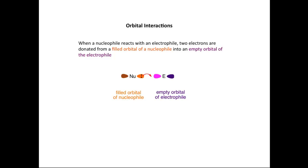When a nucleophile reacts with an electrophile, two electrons are donated from a filled orbital of the nucleophile into an empty orbital of the electrophile. This is illustrated here, where we have a filled p-orbital with a lone pair on the nucleophile interacting with the empty orbital of the electrophile. We can show the lone pair of electrons moving towards the empty orbital of the electrophile.